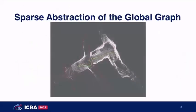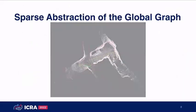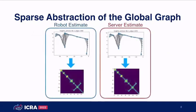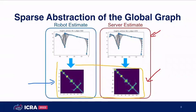What we send back is a sparse abstraction of the global graph containing only a few nodes — specifically a weighted adjacency matrix. The robot does the same thing: it also creates a sparse abstraction of its graph and converts it to a weighted adjacency matrix. This serves as a common ground that we can use for comparison.